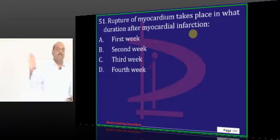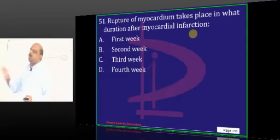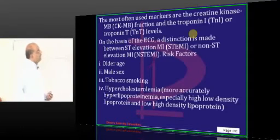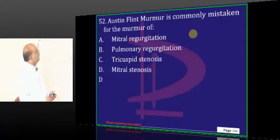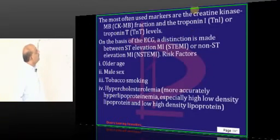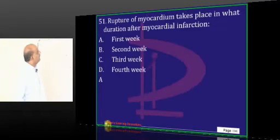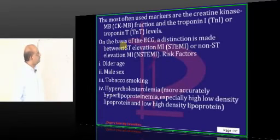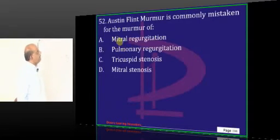When will rupture of myocardium occur? All complications of MI is a favorite topic. Rupture is a complication — it occurs in the first week of MI. Austin Flint murmur — where do you see it?